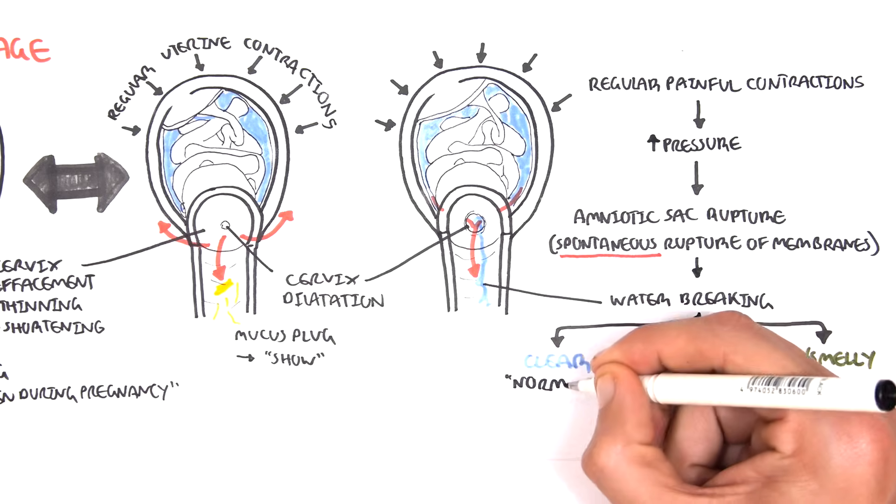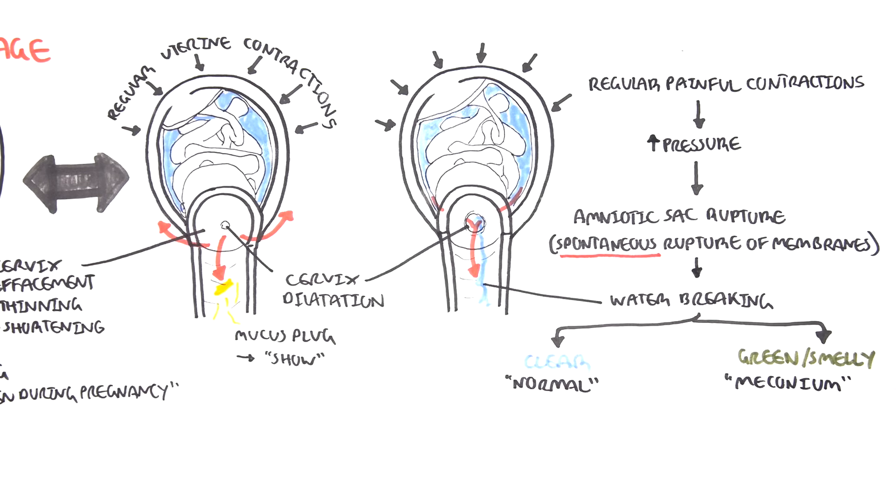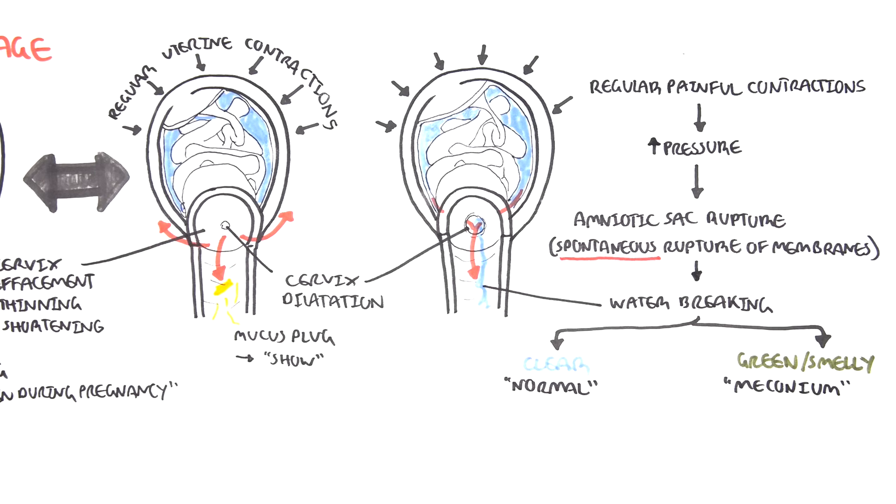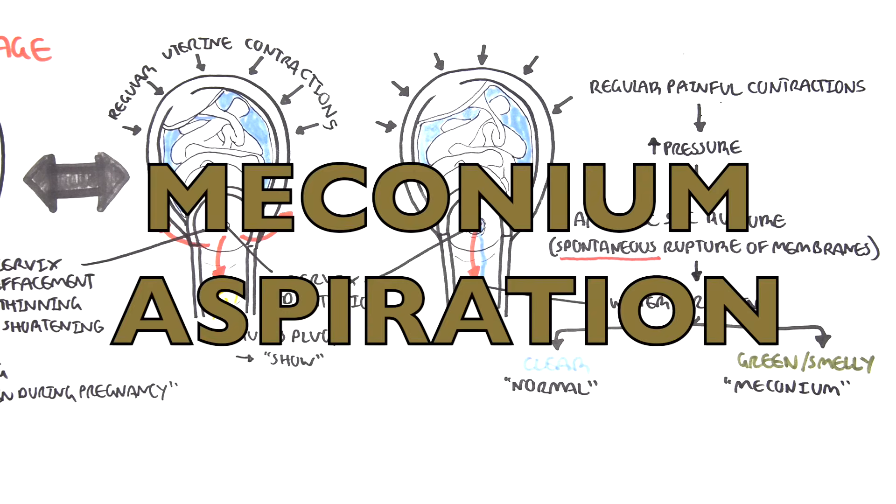However if the amniotic fluid is green or smelly this indicates meconium. Meconium is the first poo that is passed out by the fetus. And this can actually be dangerous because if the fetus pooed in the amniotic fluid, the fetus can actually swallow this amniotic fluid and it can actually go into the lungs. This is known as aspiration and it can cause respiratory problems called meconium aspiration.